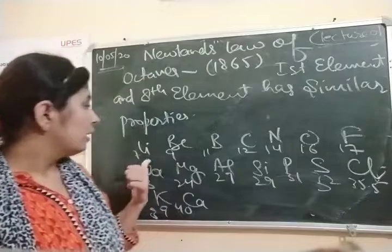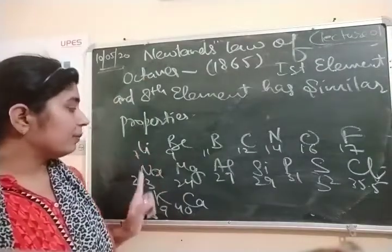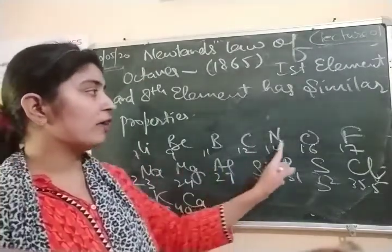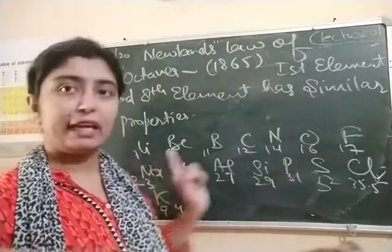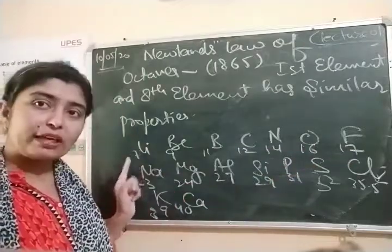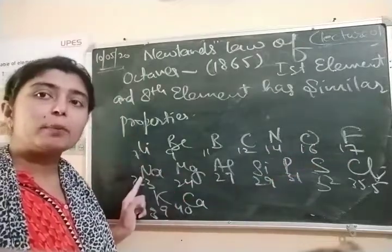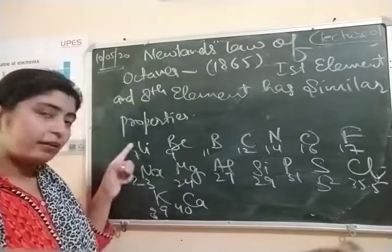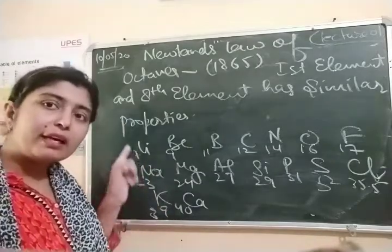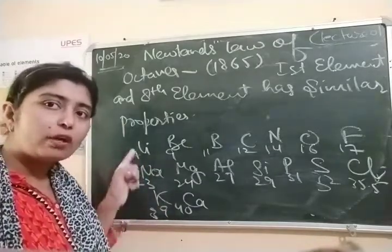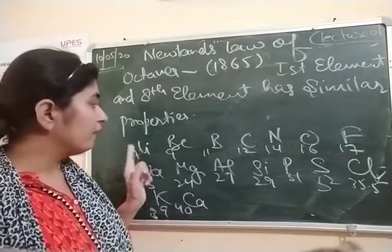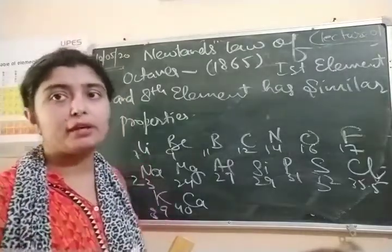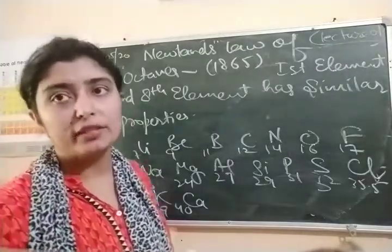So what did you observe? After lithium came sodium. One, two, three, four, five, six, seven, eight - every first and eighth element's properties matched. Both of them were placed in the same group, in the same column. Every first and eighth element have similar properties according to Newlands' Law of Octaves.